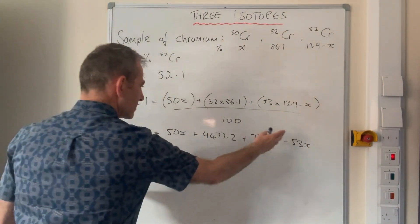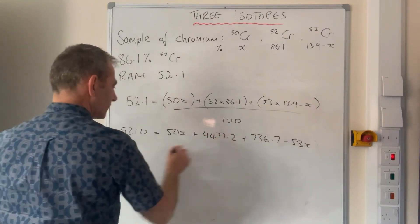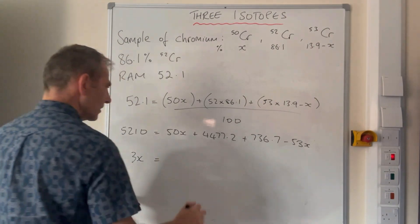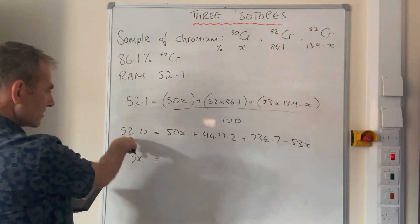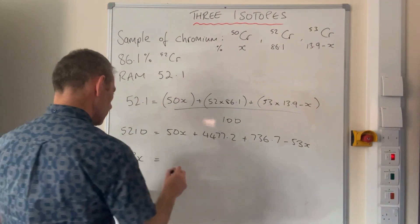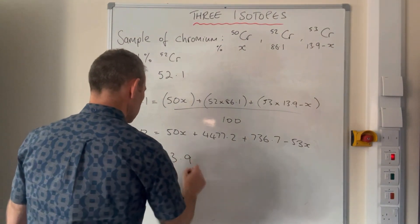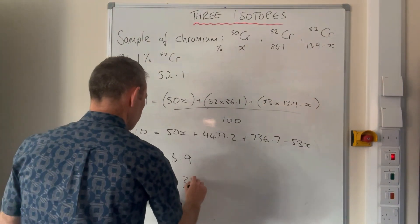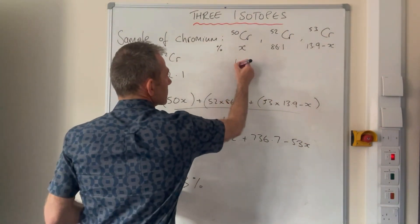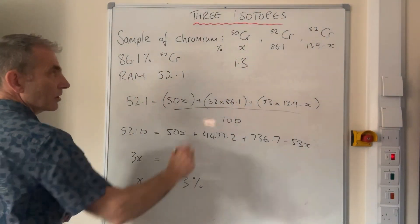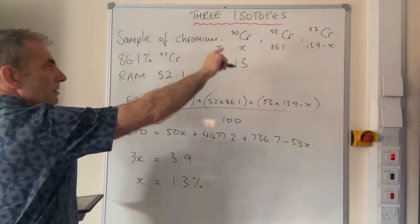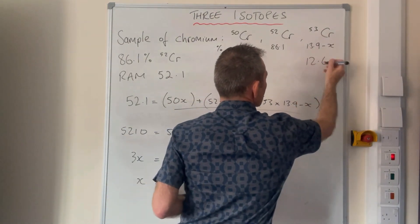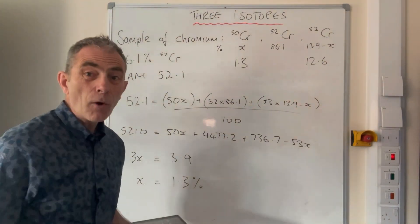Tidy that up, let's get the x's over here, so we're going to get 53x minus 50x, so we're left with 3x. That plus that minus that one, when it goes over there, comes out at 3.9. So divide by 3, so x is therefore 1.3% abundant, so this is 1.3. So the 53 isotope is 13.9 minus 1.3, which is 12.6%. Four marks for that.